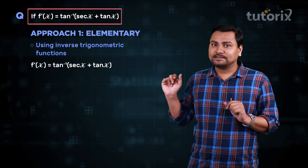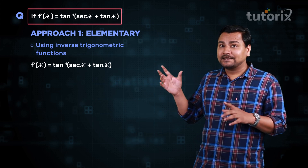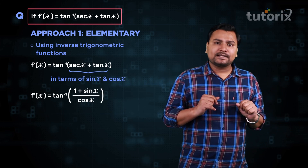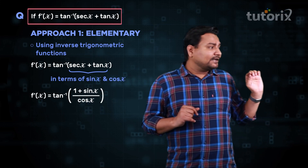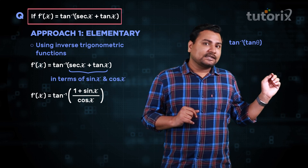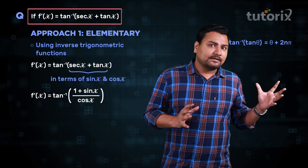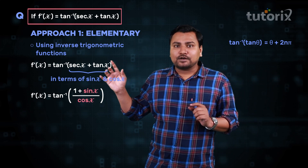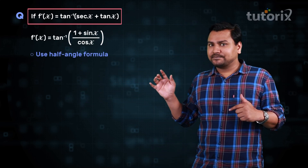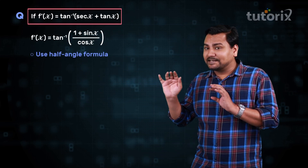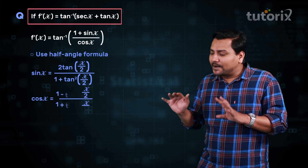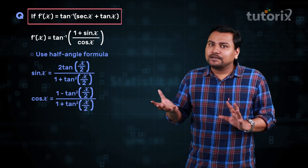We can write our f'(x) as tan inverse of secant x plus tan x, and we can write secant x plus tan x in terms of sin x and cos x as (1 plus sin x) by cos x. Now we can use the half angle formula. We know that sin x equals 2 tan(x/2) by (1 plus tan² (x/2)), and similarly cos x equals (1 minus tan²(x/2)) by (1 plus tan²(x/2)).